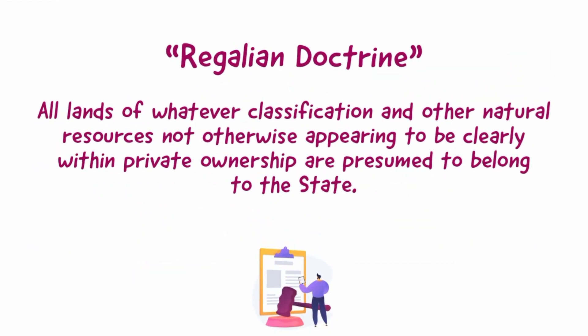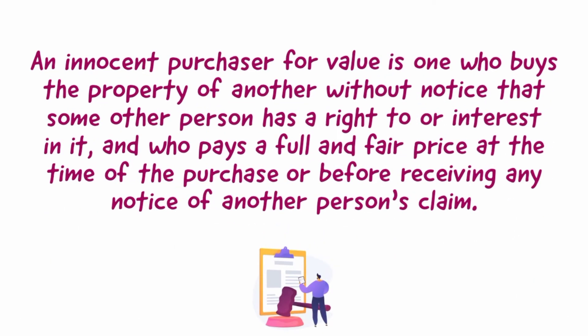Regalian doctrine: all lands of whatever classification and other natural resources not otherwise appearing to be clearly within private ownership are presumed to belong to the state. An innocent purchaser for value is one who buys the property of another without notice that some other person has a right to or interest in it, and who pays a full and fair price at the time of the purchase or before receiving any notice of another person's claim.